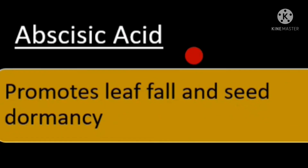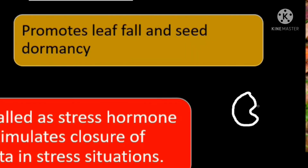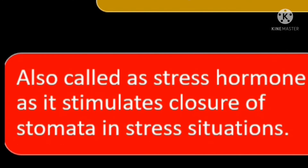Abscisic acid is a growth inhibitor. It promotes leaf fall and also promotes seed dormancy, so seeds will not be germinating — they are called dormant seeds. Abscisic acid is also called a stress hormone, as it stimulates the closure of stomata in stress situations.